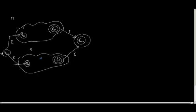So, given two automata that represent the regular expressions R and S, I can always add four empty transitions, create a new starting state and create a new final state. F_R will not remain as a final state in R plus S. Similarly, F_S will not be the final state in R plus S. In R plus S, the final state is F of R plus S and the starting state is Q of R plus S.